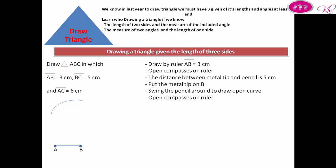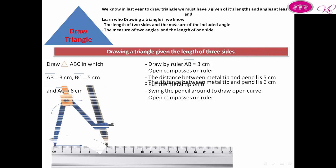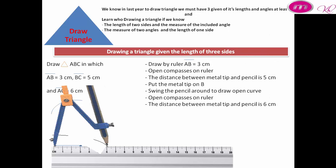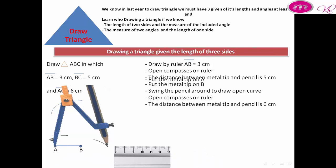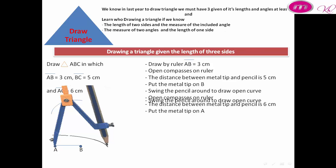Open the compass on the ruler. The distance between metal tip and pencil is 6 centimeters. Put the metal tip on A. Swing the pencil around to draw an open curve.